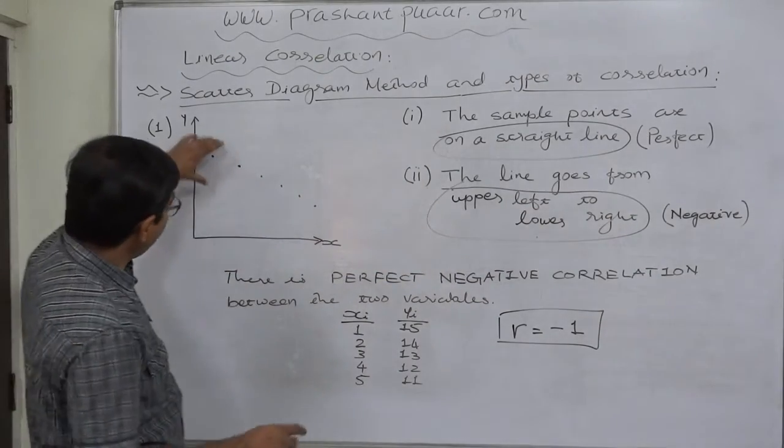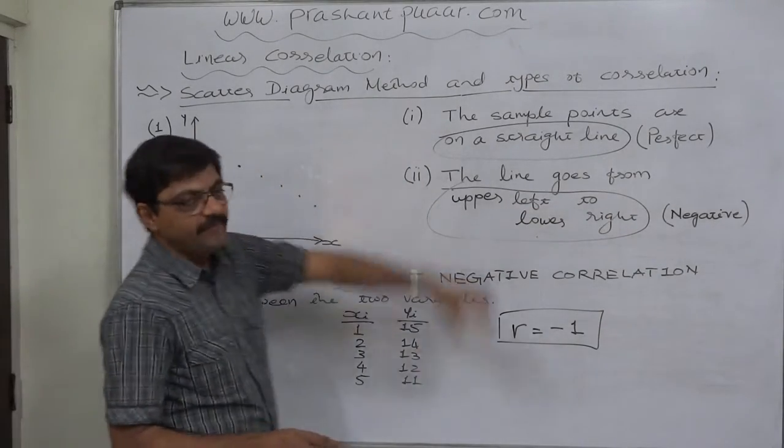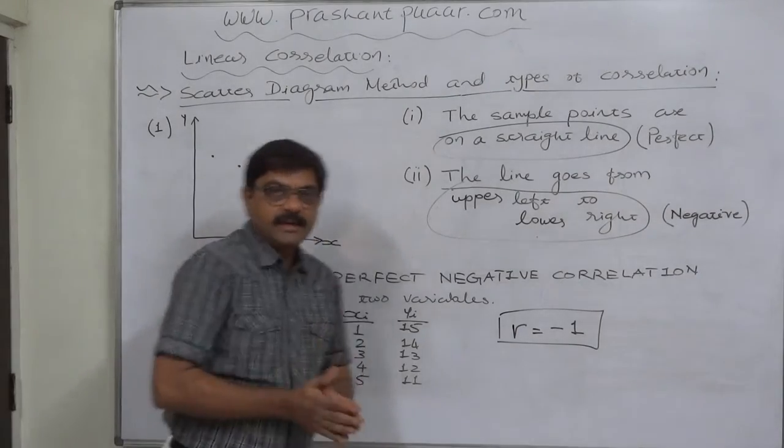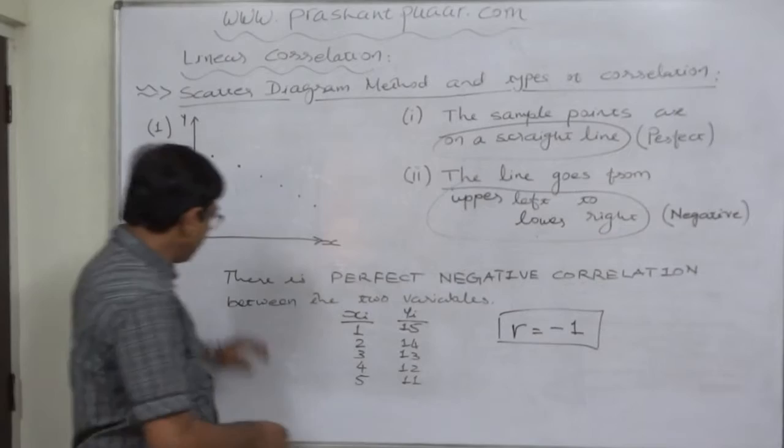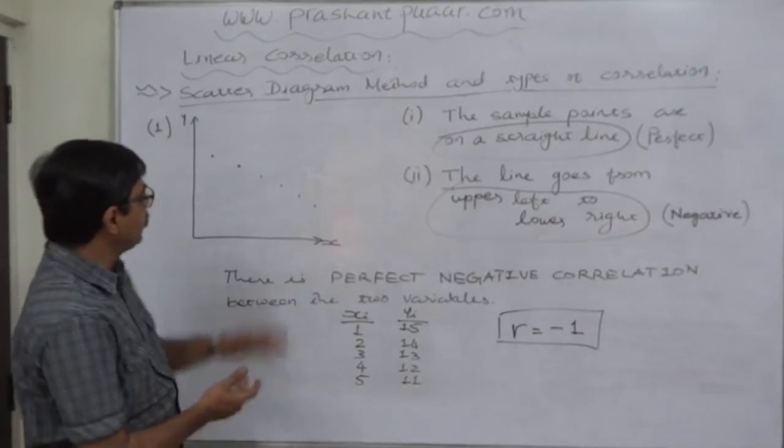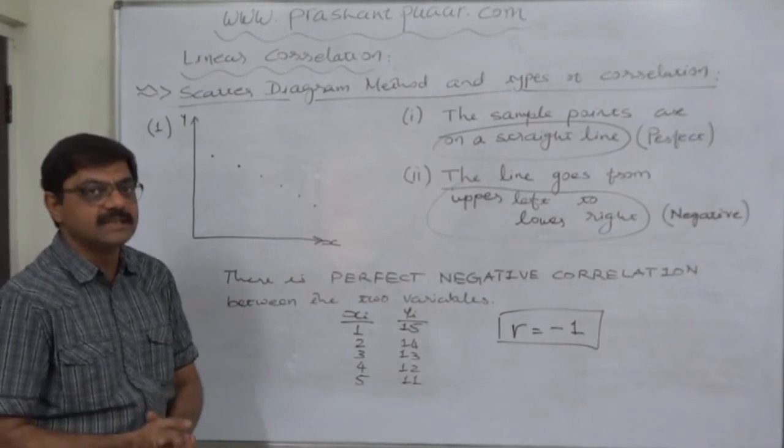And having all the sample points on a straight line suggests a perfect relationship. So ultimately we can conclude that there is perfect negative correlation between the two variables if we get all the sample points on a straight line and that line goes from upper left to lower right.